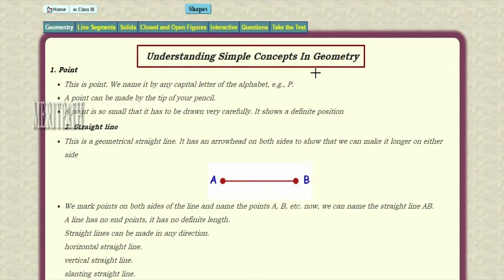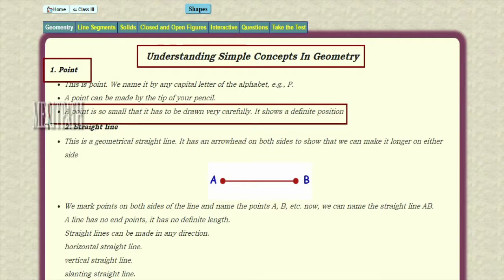Understanding simple concepts in geometry. A point is just a dot — when we take a pencil and put a dot on the paper, that dot is called a point. It has an exact location but not length. A point doesn't have length and breadth; it has only just a location.